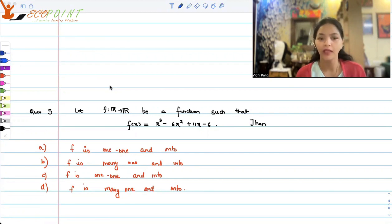Then f is 1 to 1 and onto, f is many 1 and into, f is 1-1 and into, f is many 1 and onto. So which would be the correct option?